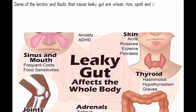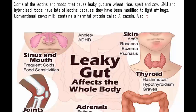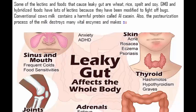Some lectins found in foods that cause leaky gut are wheat, rice, spelt, and soy. GMO and hybridized foods have lots of lectins because they have been modified to fight off bugs. Conventional cow's milk contains a harmful protein called A1 casein, and the pasteurization process destroys many vital enzymes, making sugars such as lactose very difficult to digest.